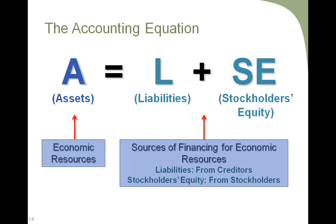Think of it this way: assets are the economic resources owned by the business, liabilities are the amounts owed including the various obligations of the business, and stockholders' equity is the investment that the stockholders — the owners — have made in the business. As shown on this PowerPoint, the sources of financing for the economic resources are the liabilities, which come from creditors, and stockholders' equity, which is funding that comes from the stockholders.